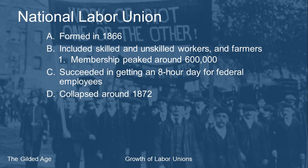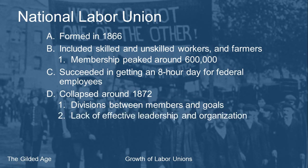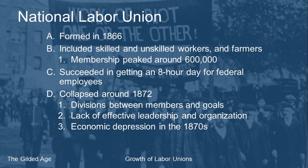That eight-hour federal workday sets an important precedent, even while the rest of America suffered through 10 and 12 hour days. Unfortunately the National Labor Union collapsed around 1872 — only about six years old. The reason was division between members: skilled versus unskilled workers, and farmers with completely different goals. The leadership was weak and chaotic, and economic depressions in the 1870s finished them off.